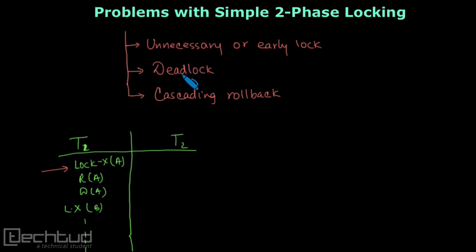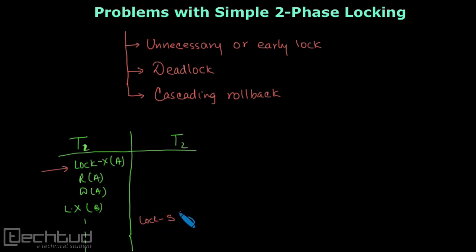However, T1 cannot release the lock on A at this point, because in the growing phase we cannot release any lock. If there are 10 such operations, the lock cannot be released until all write operations are done. So we have to hold this variable as locked the entire time.